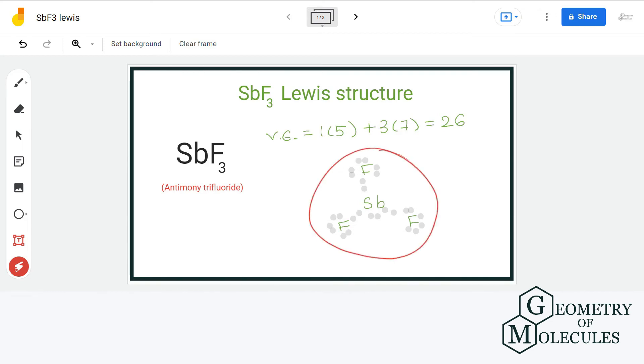Thus, in this Lewis structure, each atom has complete outer shell and 0 formal charge. So, this is the final Lewis structure of SBF3.